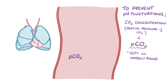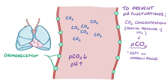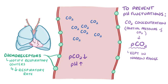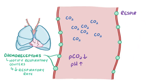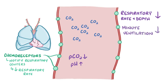If pCO2 levels start to fall and pH levels start to rise, peripheral chemoreceptors found in the walls of the carotid arteries and in the wall of the aortic arch start to fire less, and that notifies the respiratory centers in the brainstem that they need to decrease the respiratory rate and depth of breathing. As the respiratory rate decreases and breaths become more shallow, the minute ventilation decreases, which is the volume of air that moves in and out of the lungs in a minute. The decreased ventilation means less carbon dioxide moves out of the body, which increases the pCO2 in the body and lowers the pH.